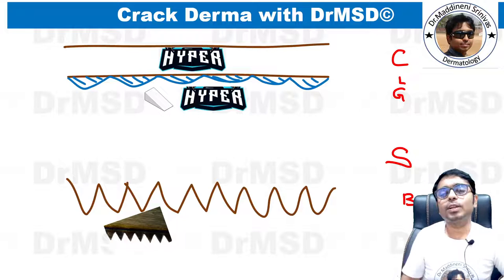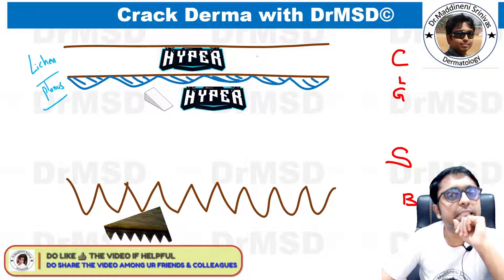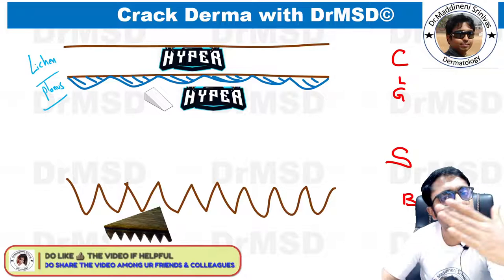Here is the lichen planus histopathology which we are going to discuss. This picture is a line diagram depicting the epidermis and all its layers from superficial to deep: stratum corneum, stratum lucidum, stratum granulosum, stratum spinosum, and stratum basale.